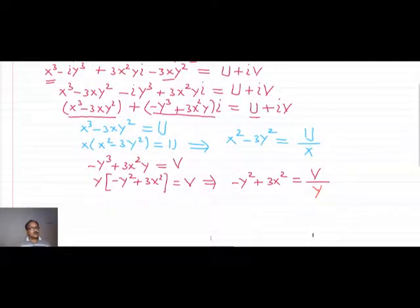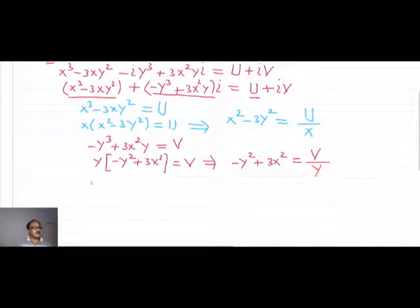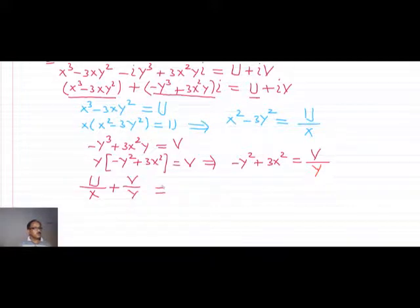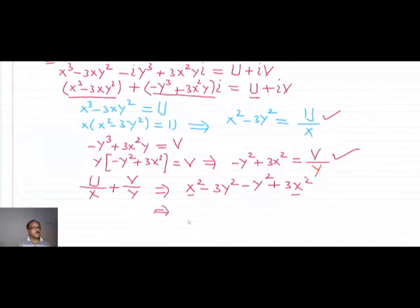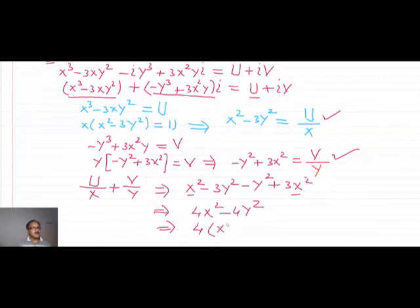We need to show that u/x plus v/y equals 4(x² minus y²). Substituting the values: u/x is x² minus 3y², and v/y is minus y² plus 3x². Adding them together gives 4x² minus 4y². Taking 4 common gives 4(x² minus y²), which is the required result.